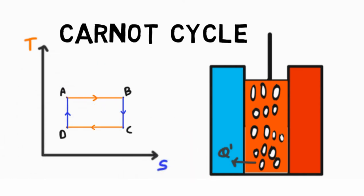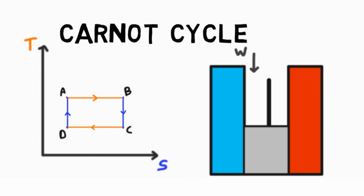The final process is a reversible constant entropy process in which work is done on the system, the internal energy is increased and restored to point 1, and the temperature rises from T2 to T1.